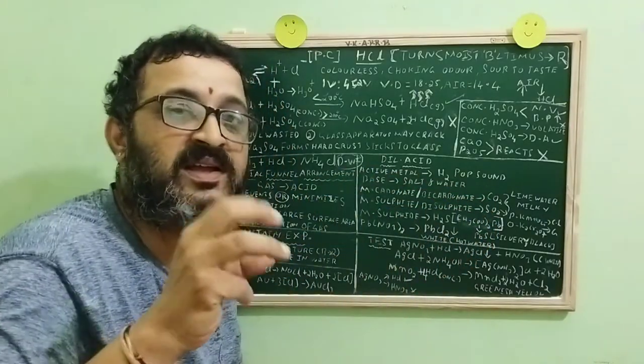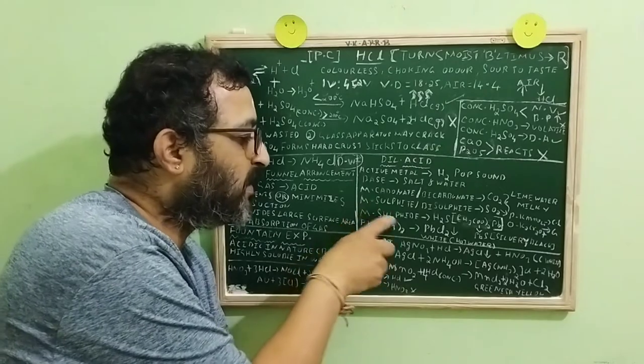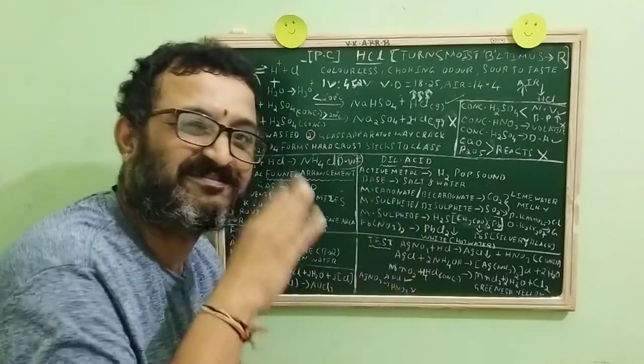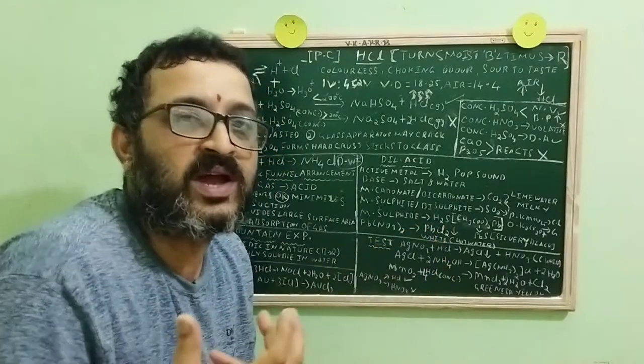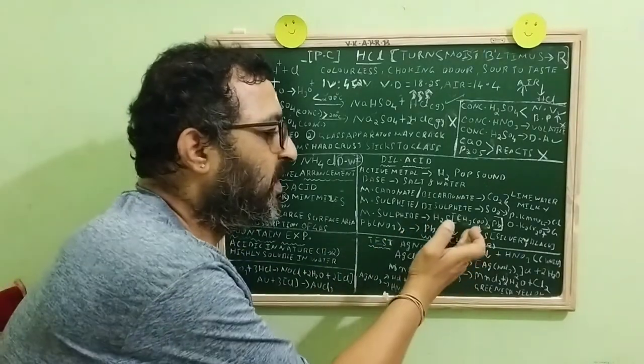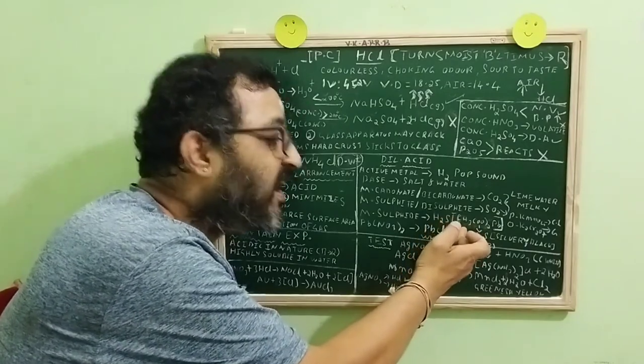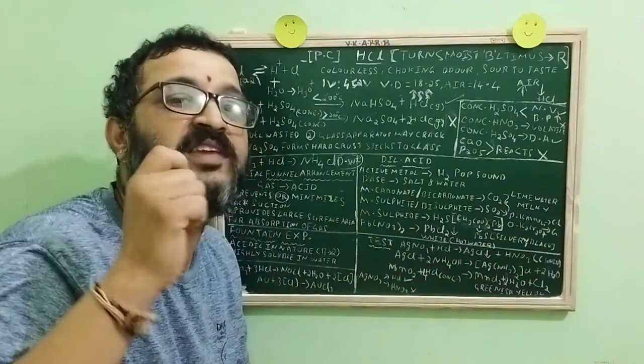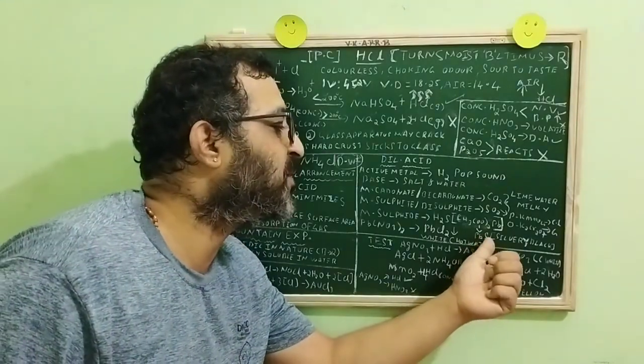Then, dilute acids with metal sulphides will produce a rotten egg smelling gas. What is that? H2S. How do you confirm that it is H2S? Definitely, it turns, that is H2S turns lead acetate paper silvery black. That silvery black compound is nothing but PbS.